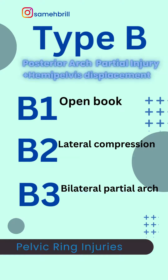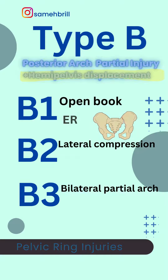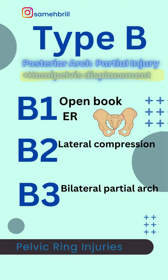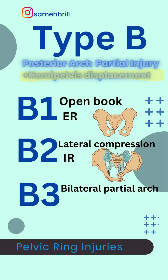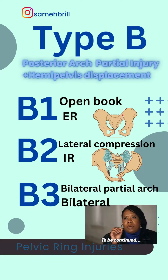Looking at the hemipelvis displacement in Type B: in B1, the hemipelvis is externally rotated; in B2, the hemipelvis is internally rotated; and in B3, it is accompanied by lateral hemipelvis displacement.